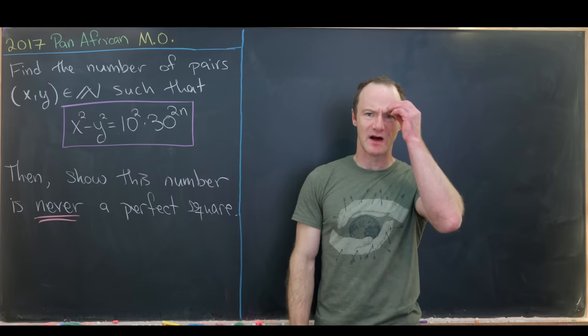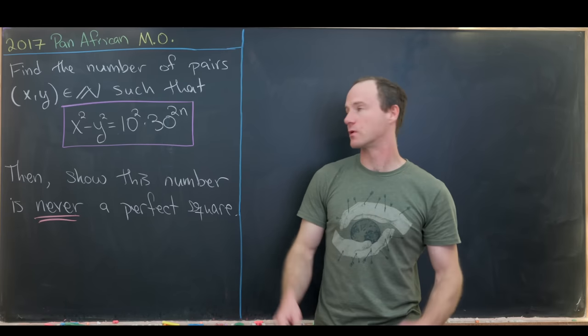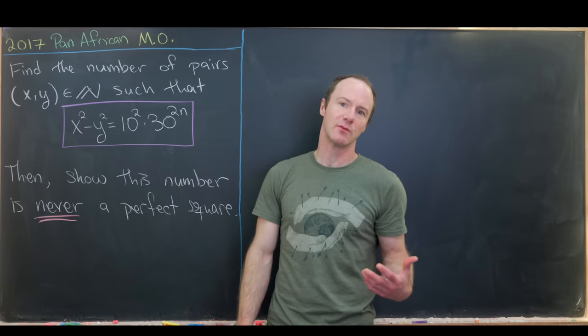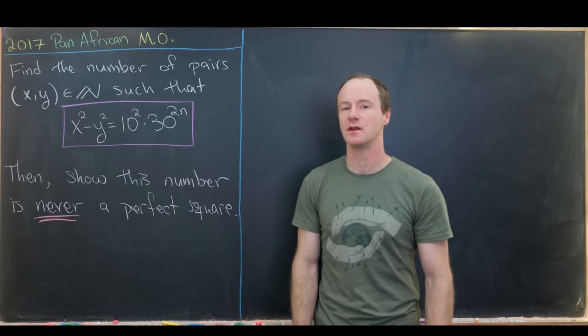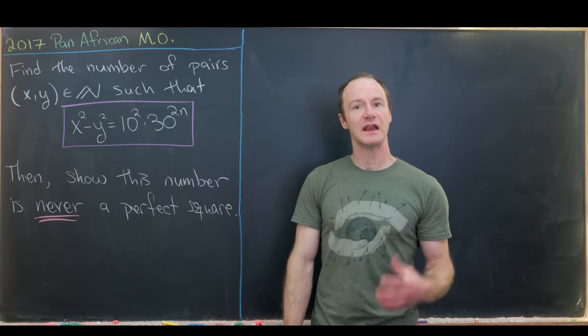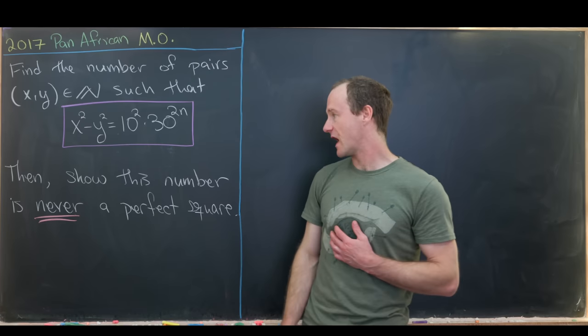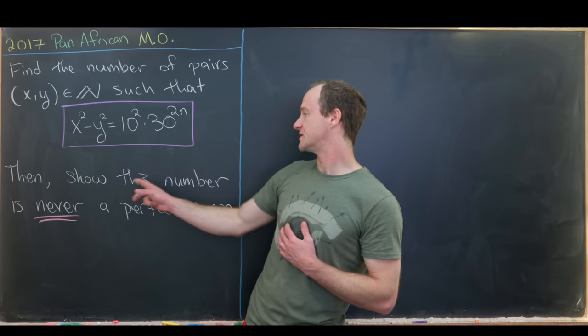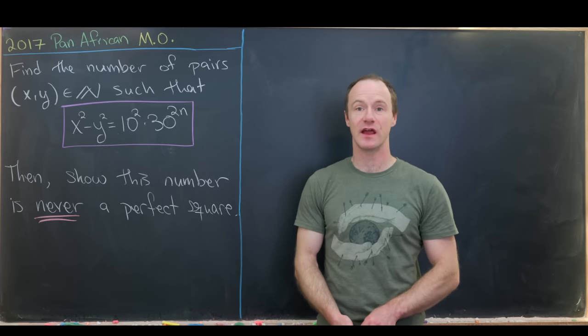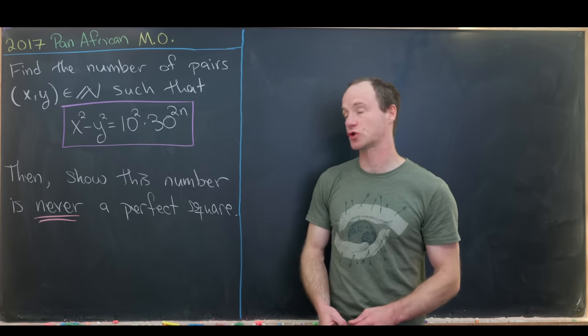The number of pairs will depend on n. After finding that, we need to show that this number is never a perfect square.